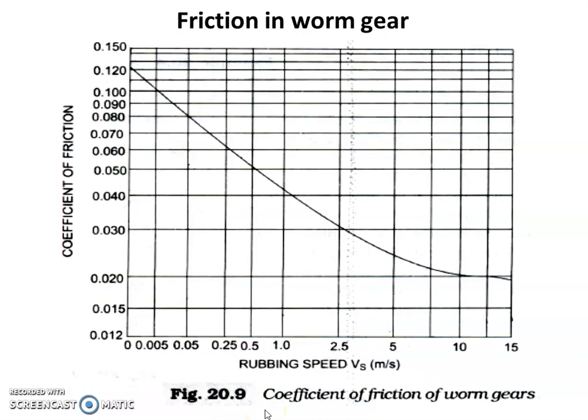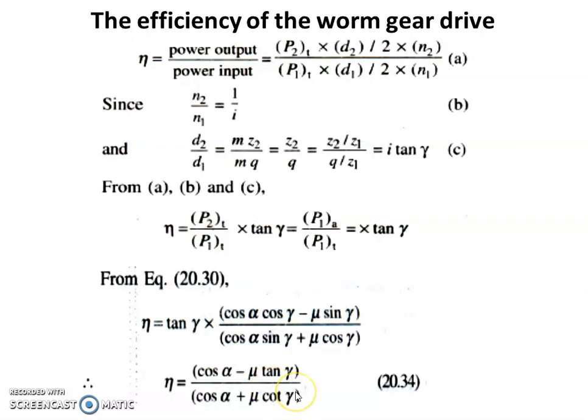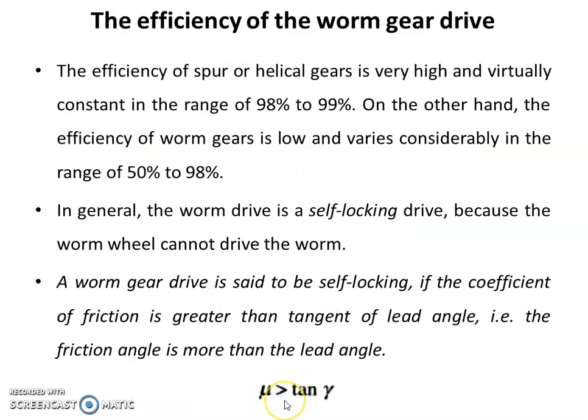The coefficient of friction and efficiency are the two most important terms when considering friction effects in worm gear drives. The efficiency of spur and helical gears is virtually constant in the range of 98–99%, but for worm gear drives it ranges from 50% to 98%. In general, worm gear drive is self-locking because the worm wheel cannot drive the worm — motion transfers from worm to worm wheel but not easily in the reverse direction.